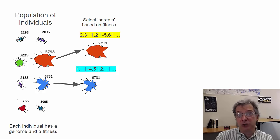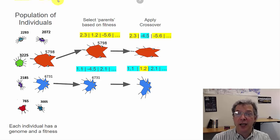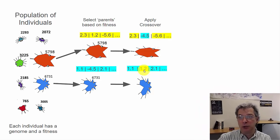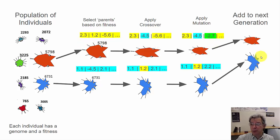I'm going to code tournament selection, which tends to work fairly well. Once we've selected two individuals as parents, we do our crossover operation — taking genes from one individual's genome and swapping with genes from the other individual's genome, mixing parts of each solution. Then we apply a mutation operation, which randomly changes a value a little bit. In the generational model I'm coding, we take these two new offspring and put them in the next generation.